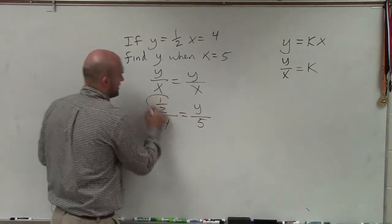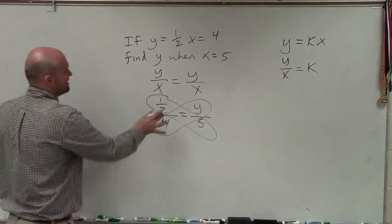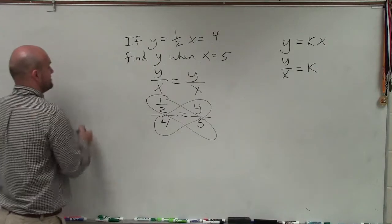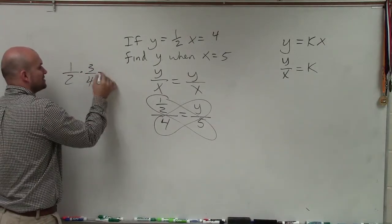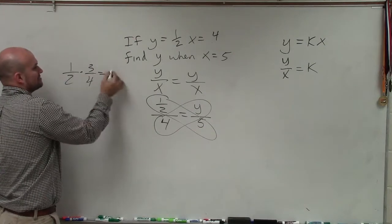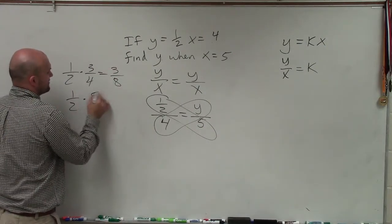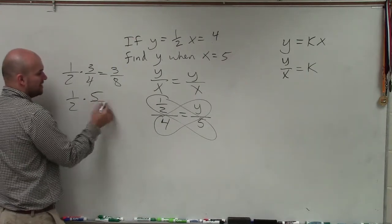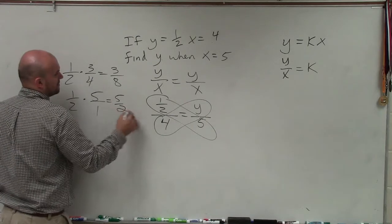Now I need to apply the cross product. And to apply the cross product, we've got to make sure we know how to multiply a whole number times a fraction. If I had a fraction times a fraction, you'd just multiply across. 1 times 3 is 3, 2 times 4 is 8. So if I have a fraction times a whole number, I just need to rewrite it as a fraction and multiply across, which would be 5 halves.